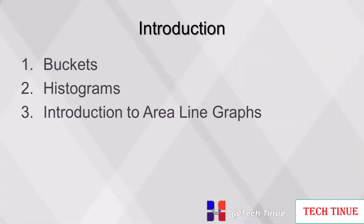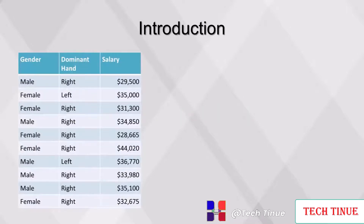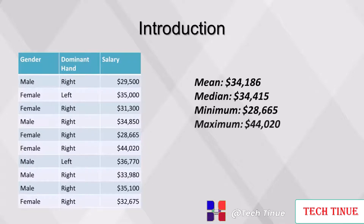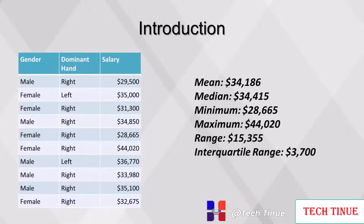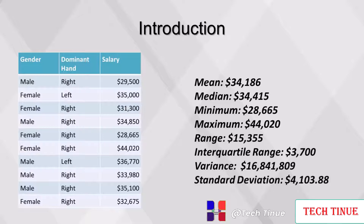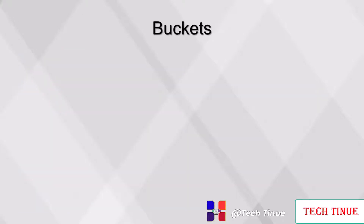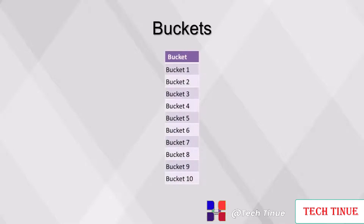This video will cover distribution visualizations, including buckets, histograms, and an introduction to area line graphs. We begin with a dataset containing gender, dominant hand, and salary, with calculated measures including mean, median, minimum, maximum, range, interquartile range, variance, standard deviation, and z-scores. To build a histogram — the most common way to visualize a numeric distribution — we'll group the data into buckets or bins of equal size. First, locate the minimum and maximum values, then subtract the minimum from the maximum and divide by the number of buckets, giving us a value of $1,536 per bucket.